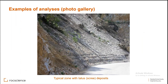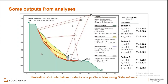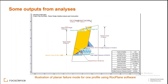Several slides demonstrate use of the software. The Slide software analyzes circular failure stability with input parameters and loading combinations. Rock Plane software was used to analyze plane failure along foliation planes combined with tension joints, water infiltration, and seismic loads, yielding factor of safety and probability of failure.